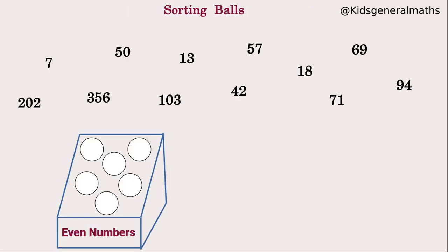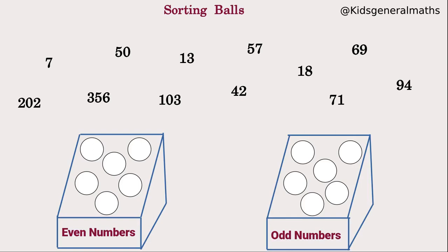Next we are going to sort these numbers into their respective boxes. First, 7: is it an even or odd number? It is an odd number — place 7 in the odd number box. Next, 50: it is an even number — place 50 in the even number box. Next, 13: it is an odd number — place 13 in the odd number box. Next, 57: it is an odd number — place 57 in the odd number box.